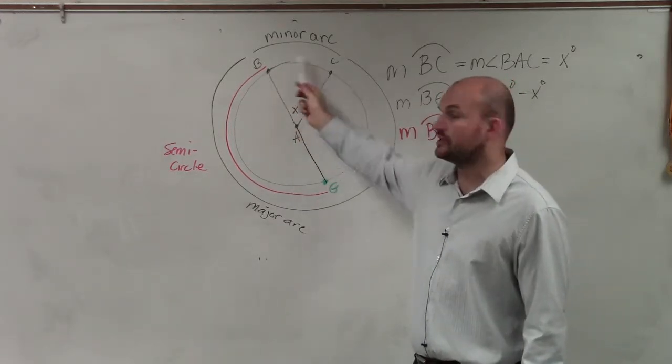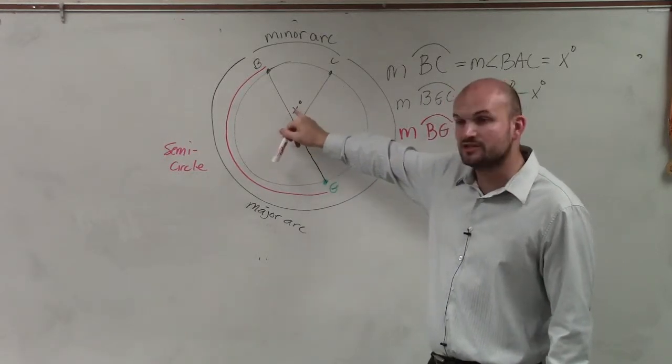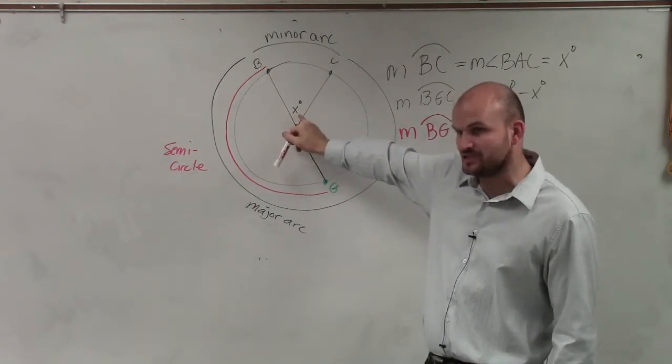So when I'm measuring this minor arc, I'm talking about the measure of the minor arc is the rotation of your two radii, which is x degrees.